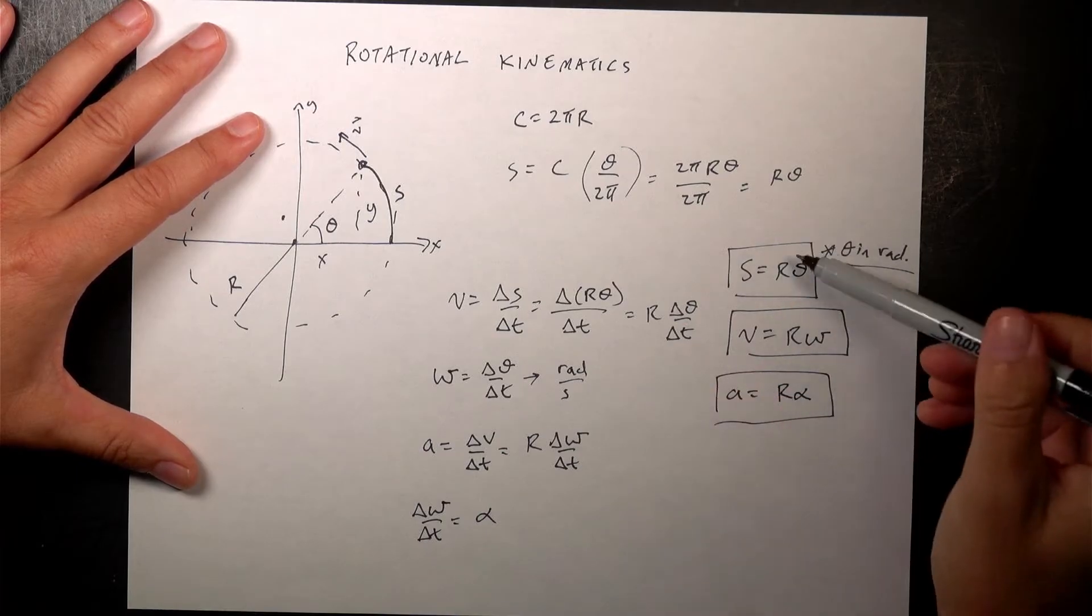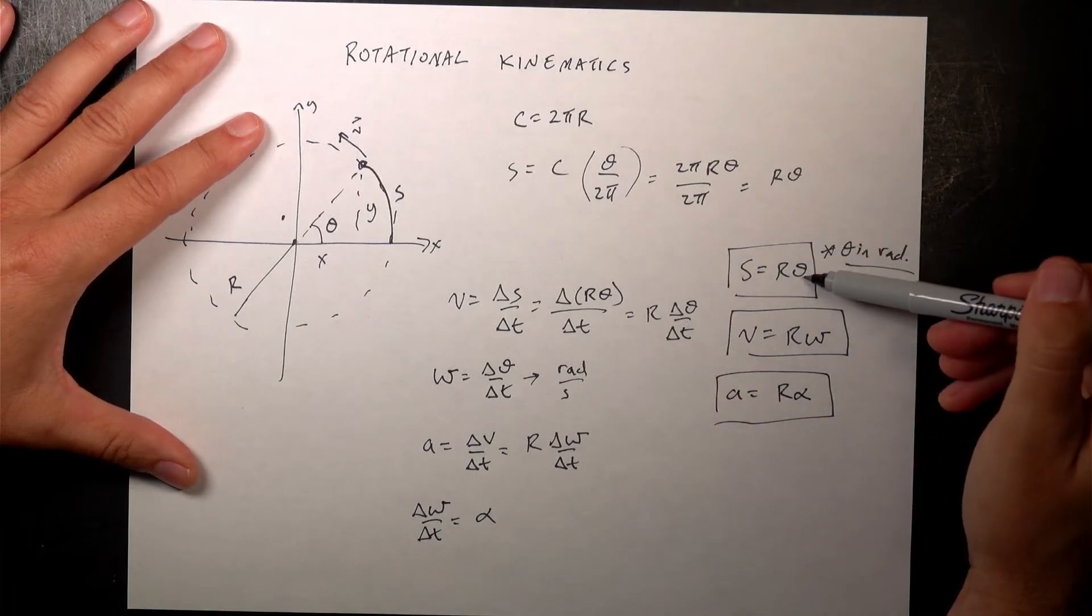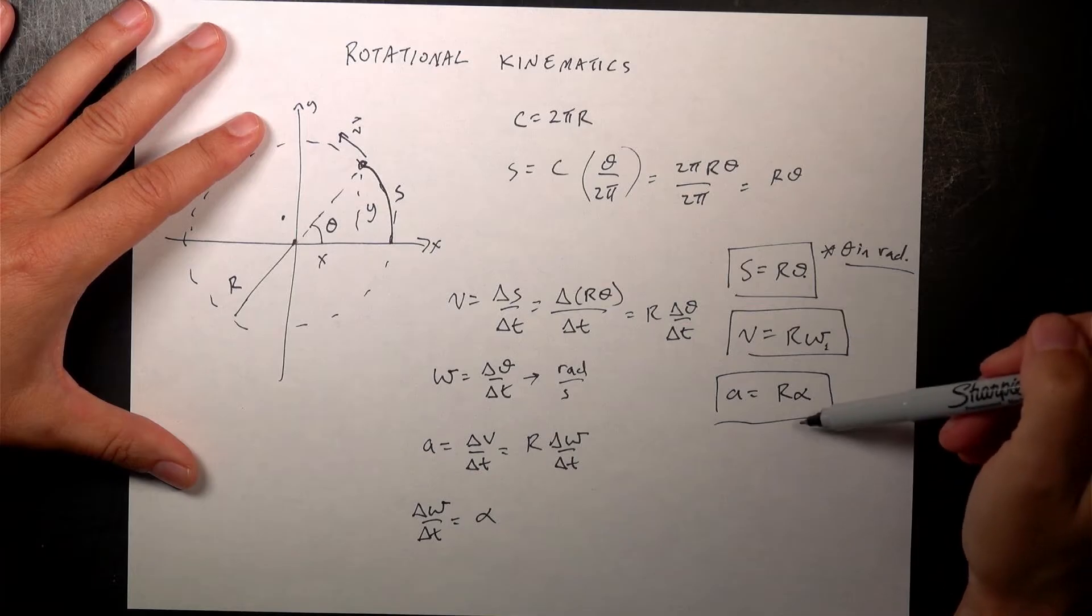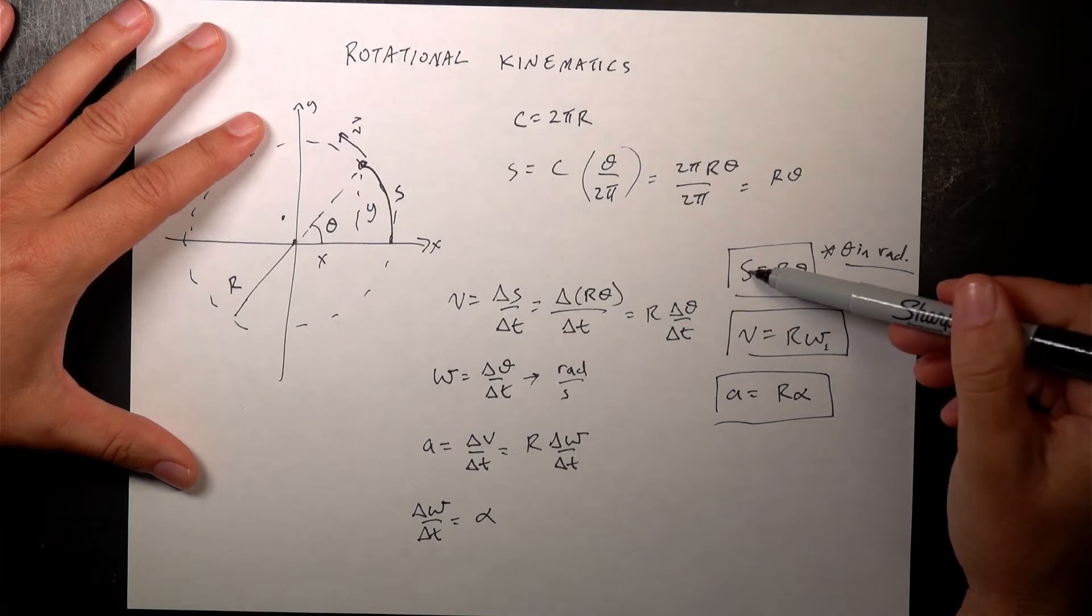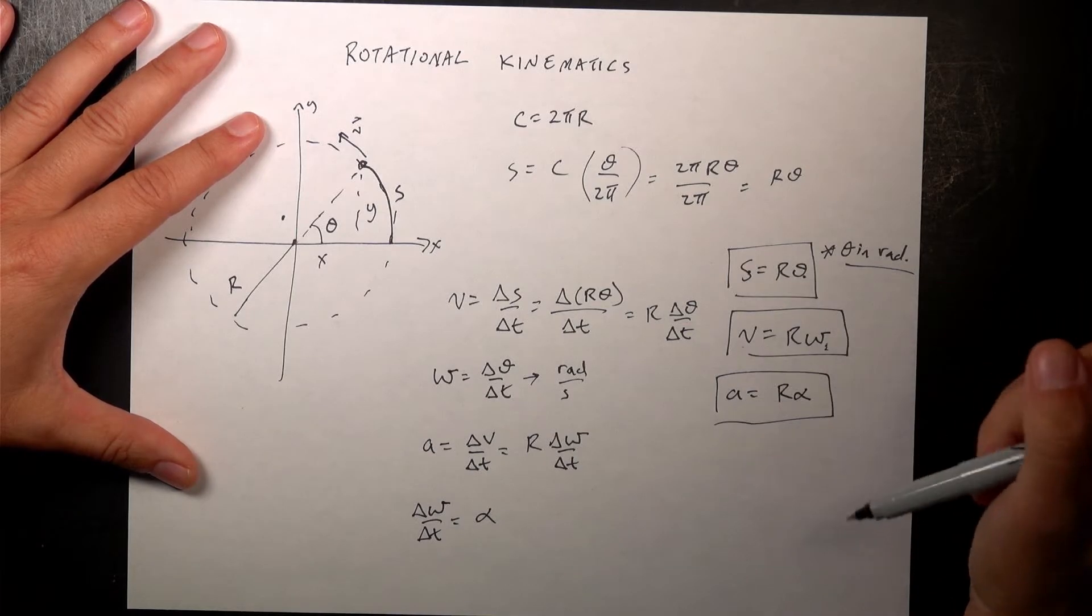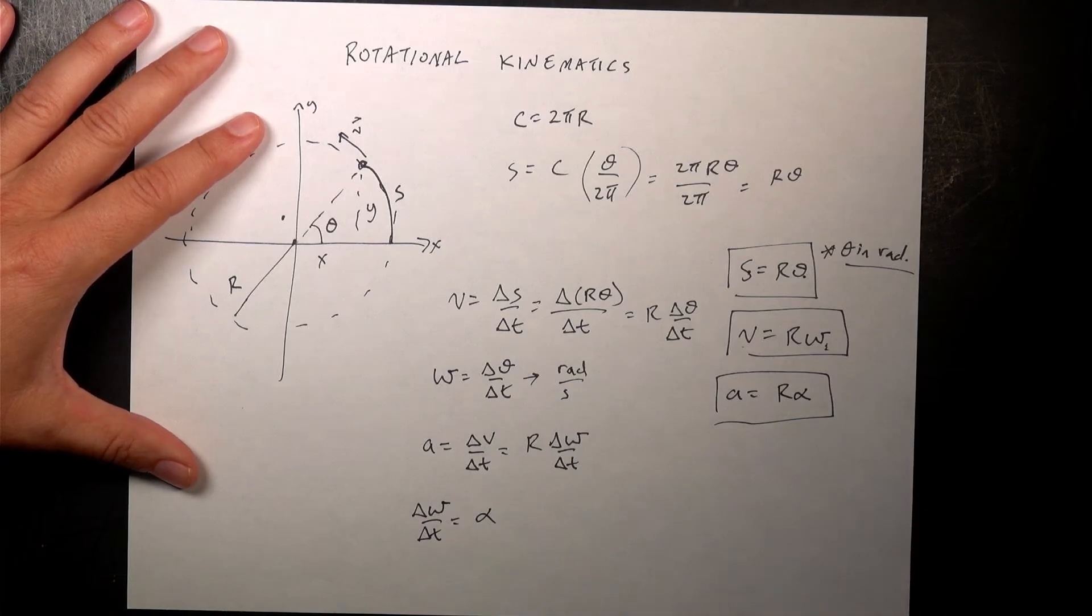So here are my angular quantities, theta, omega, alpha, and my linear quantities, s, v, and a. But wait, there's more.